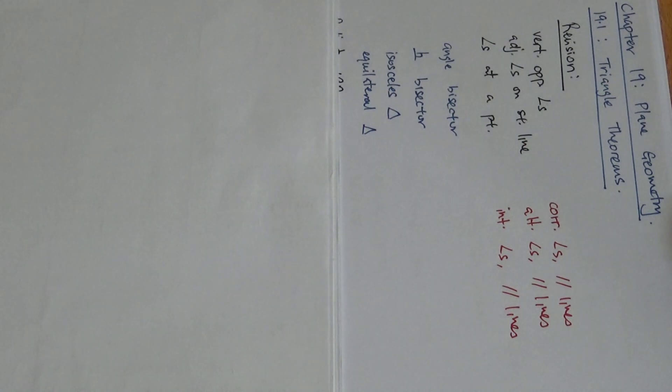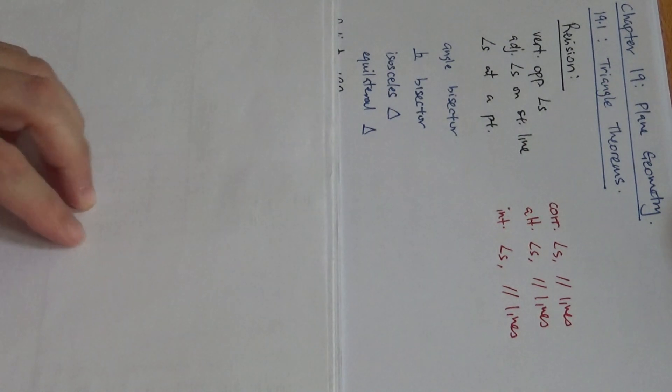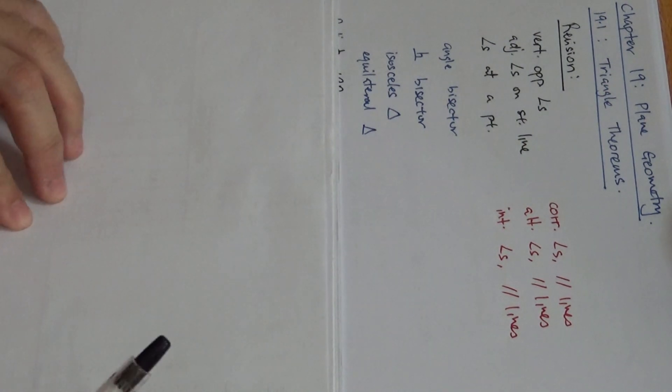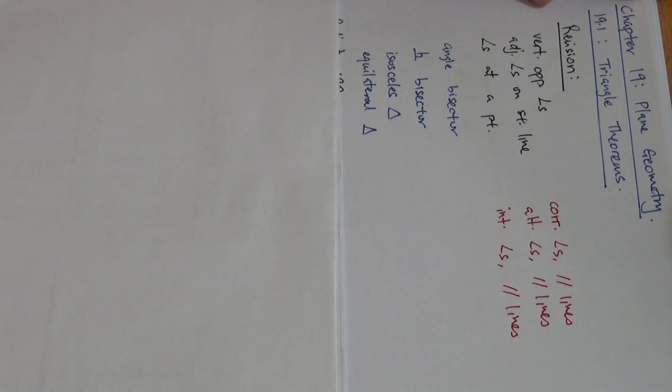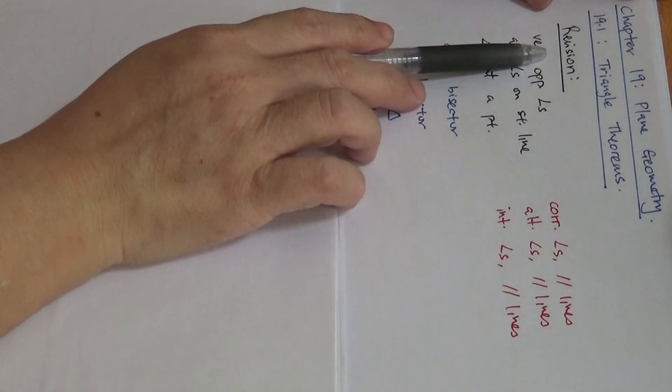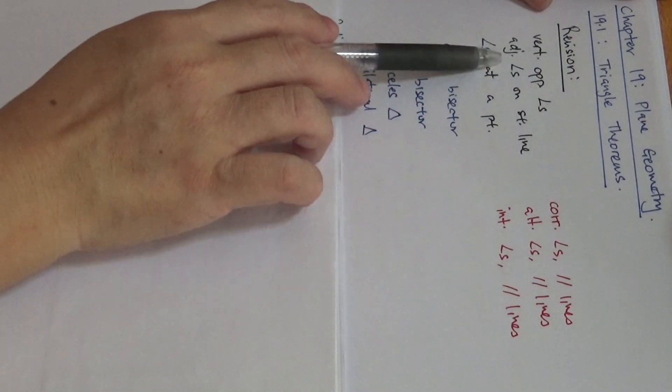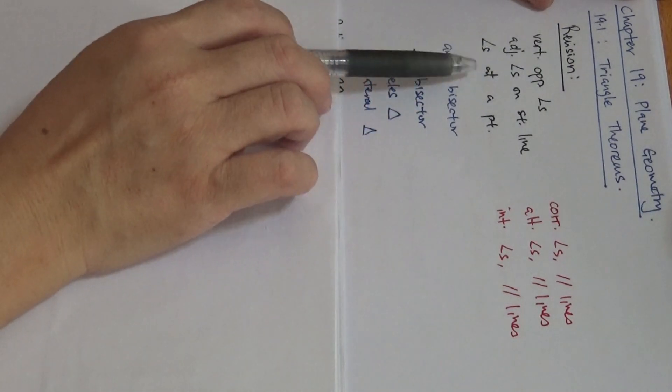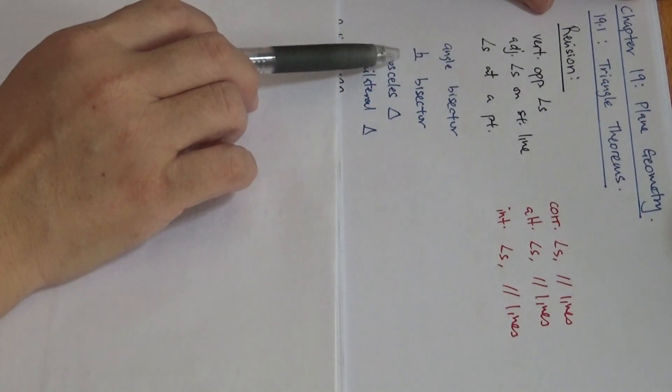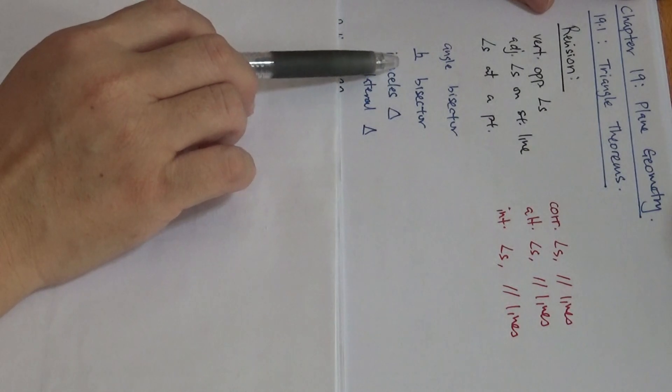Today we are going on to Chapter 19, Plane Geometry, and we are going to start with the first section on Triangle Theorems. Before we start on Triangle Theorems, we are going to do revision of our Maths properties that we are going to use in this particular section.